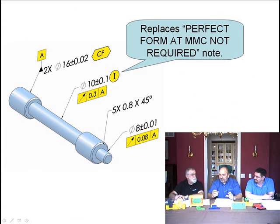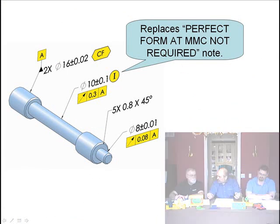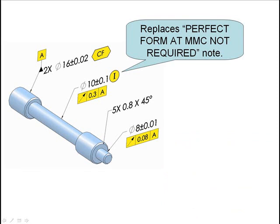Yeah, when you have a feature of size with a fairly tight size tolerance, but it's a really long feature, rule one became pretty impractical.